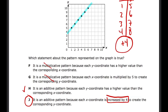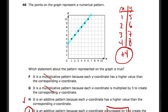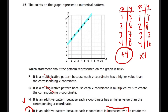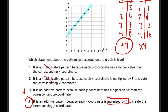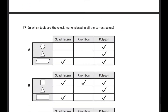Even though H — 'the y value is higher than the x value' — is true, J is the better answer. This is because H is not exclusive to additive patterns. In a multiplicative pattern with a rule of times 4, the y values would also always be higher than the x values. So just because y is higher than x doesn't automatically mean it's additive. H is true but not specific enough; J correctly identifies the additive rule.